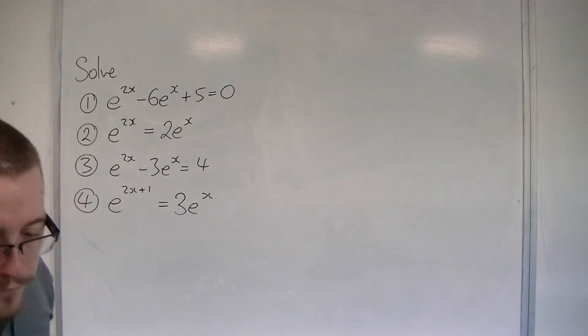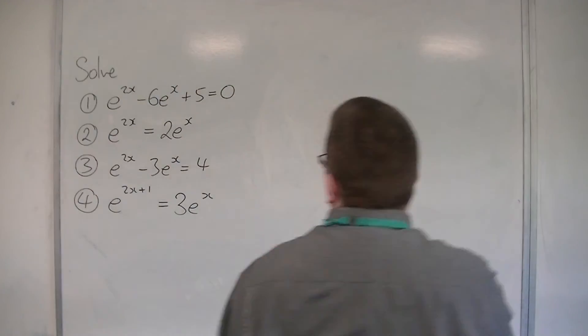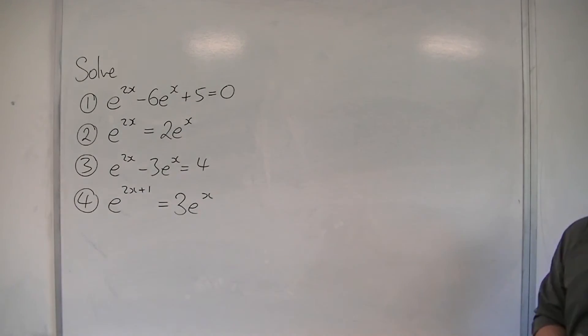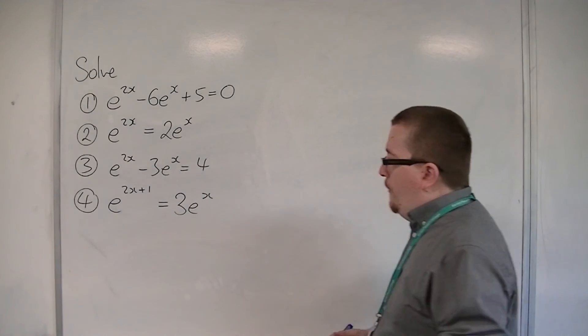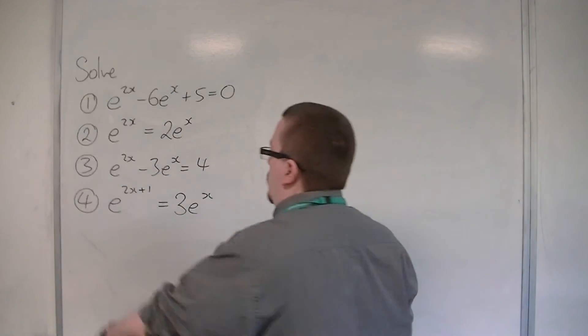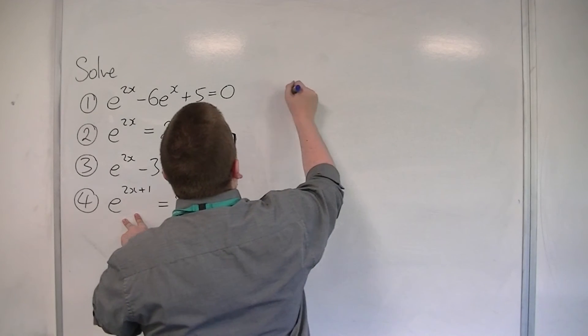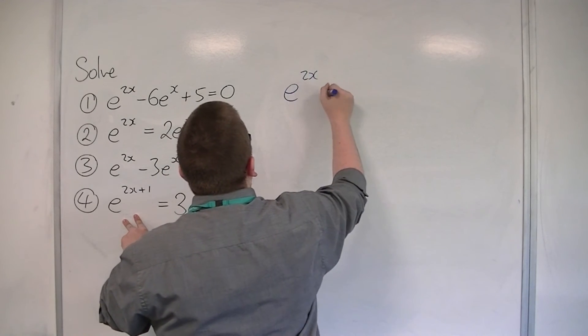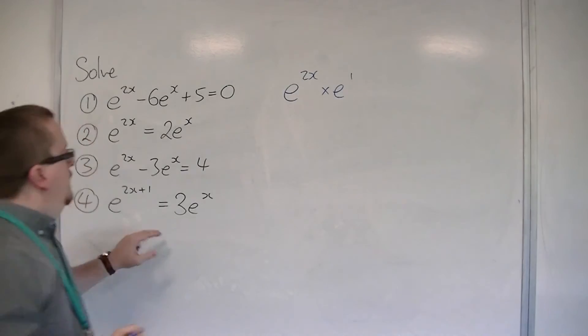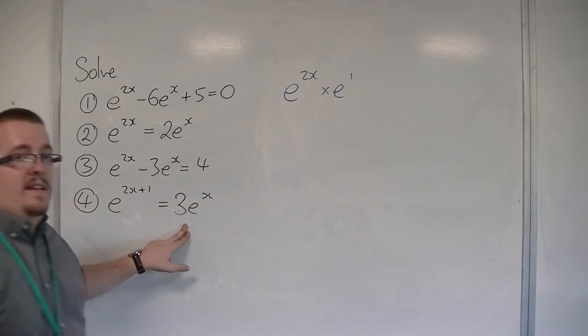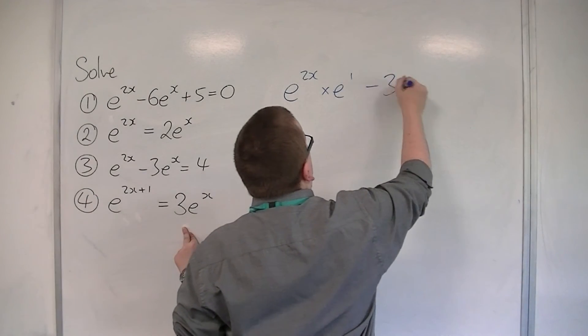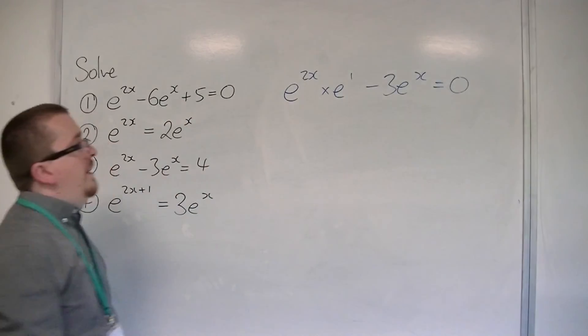Finally, number 4. e to the 2x plus 1 is equal to 3e to the x. So the first thing that I'm going to do is write e to the 2x plus 1 as e to the 2x times e to the 1, and I'm going to take 3e to the x from both sides.